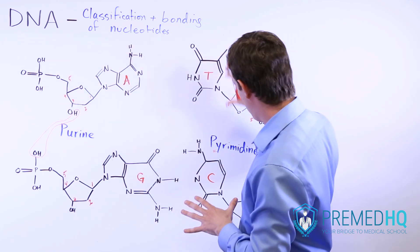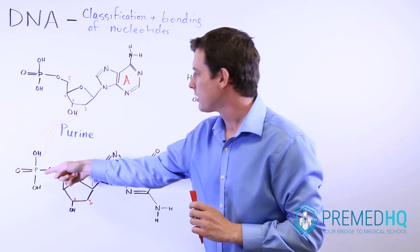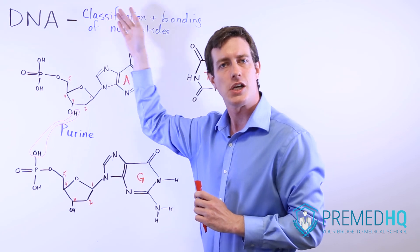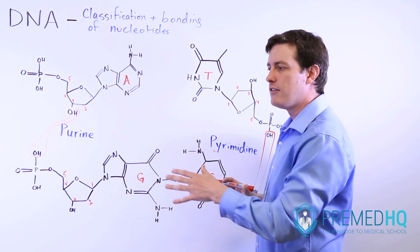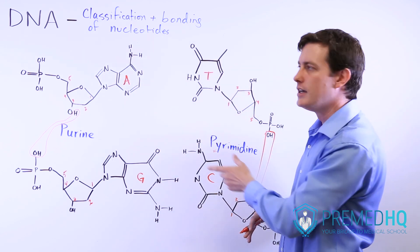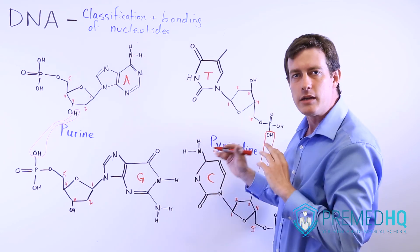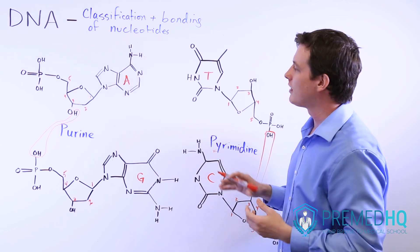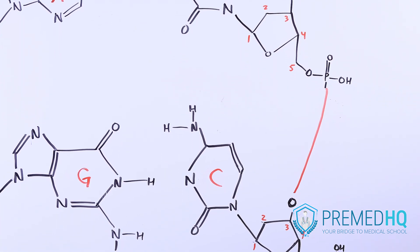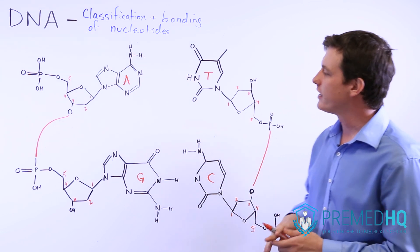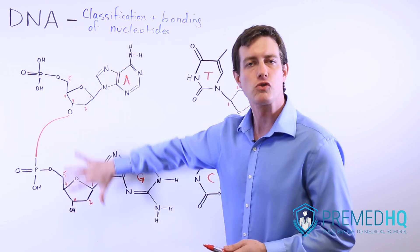To form one strand, you simply connect sugar with phosphate, with sugar, with phosphate, with an adjacent sugar. But usually DNA takes the form of double-stranded DNA, which involves having a complementary strand that it connects to. We'll discuss the formation of the complementary strand, the labeling of the different ends, and the base pairing that allows these groups to connect to each other. Now that we've discussed phosphodiester formation and the sugar-phosphate backbone that produces a strand of DNA, we'll discuss the other forces that connect nucleotides across strands.